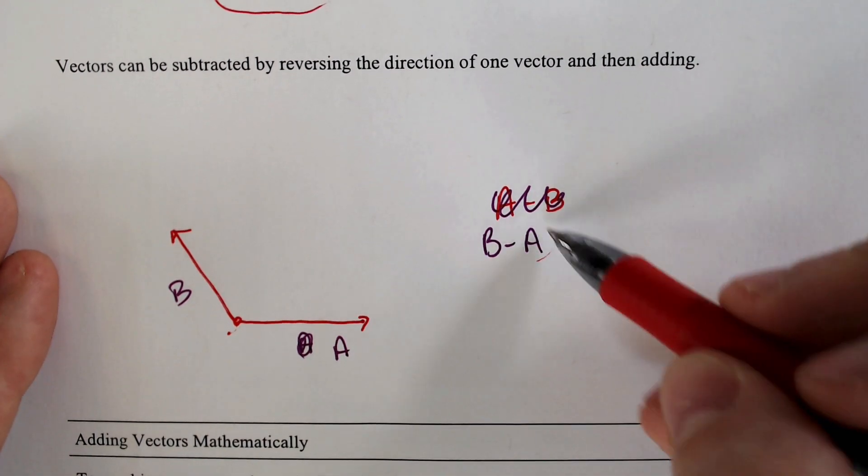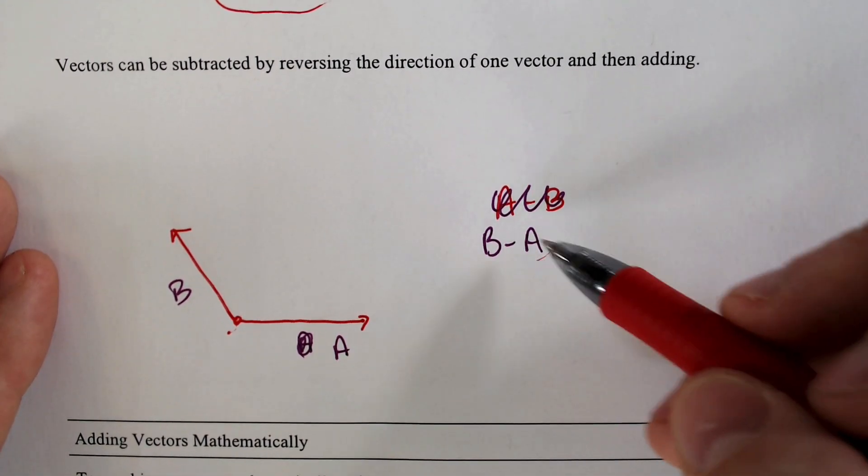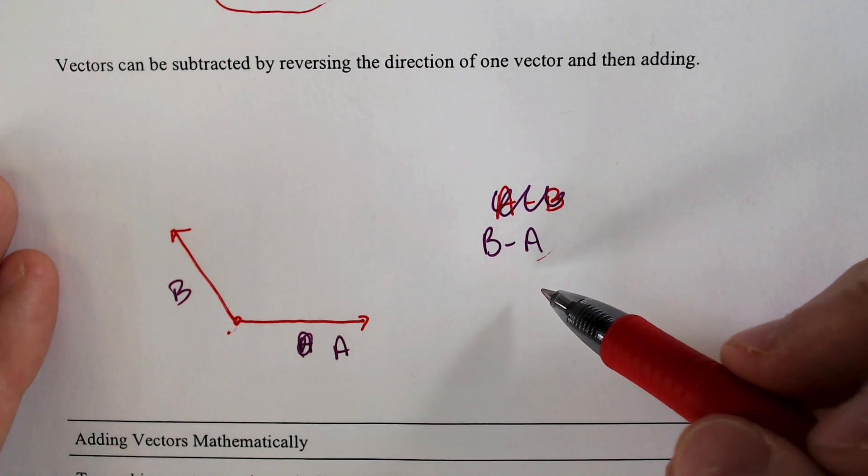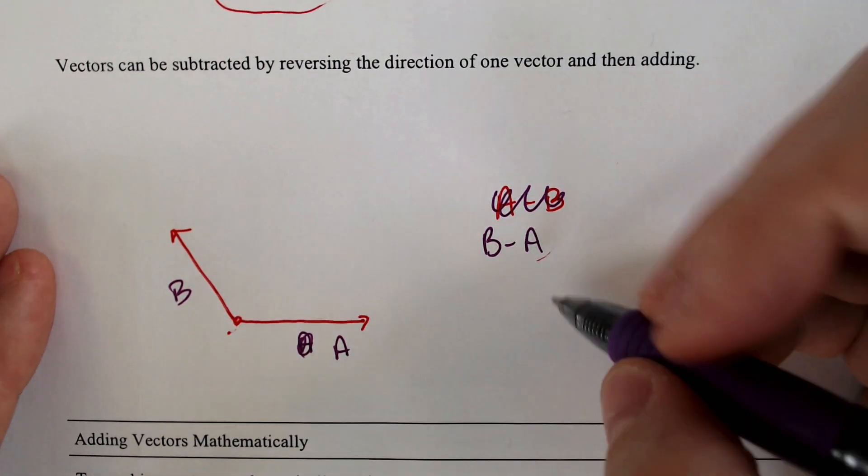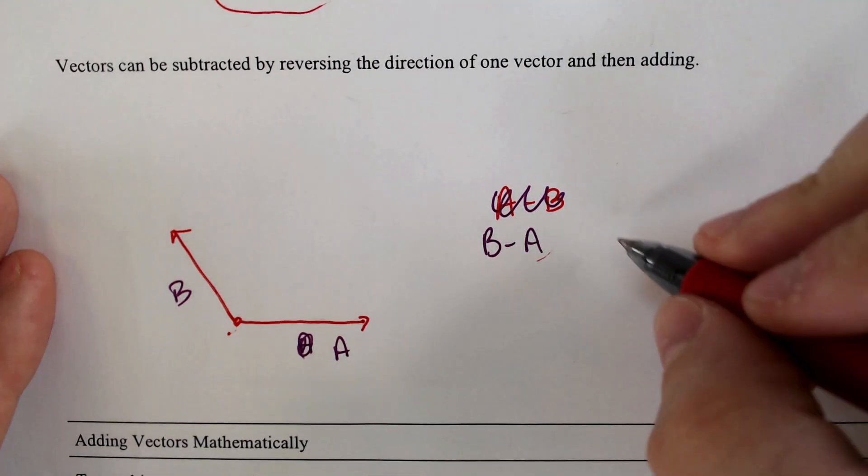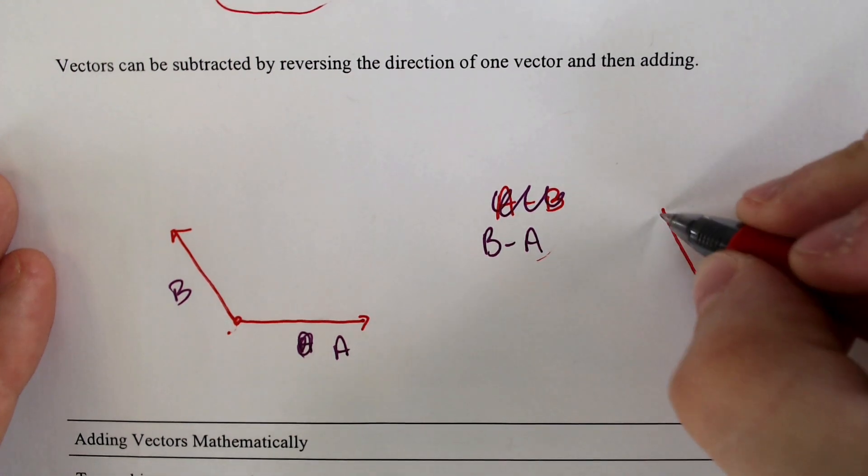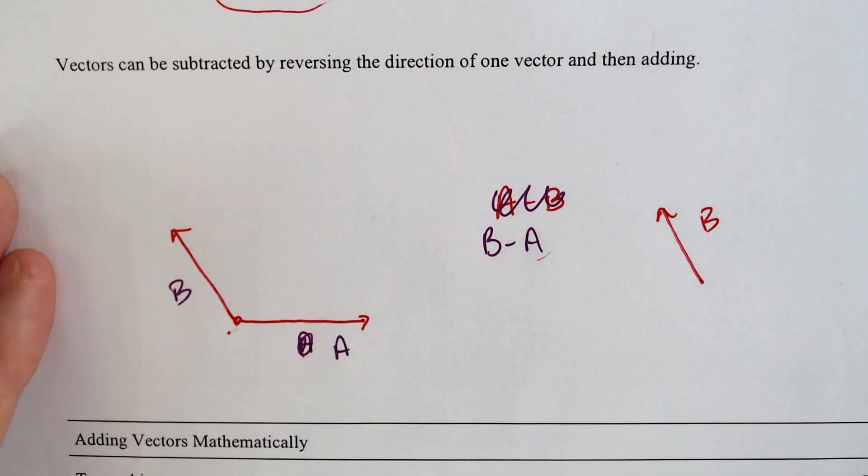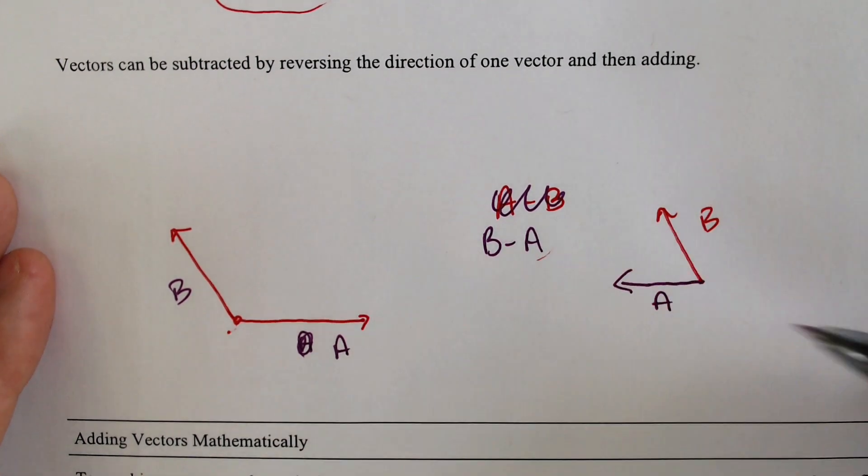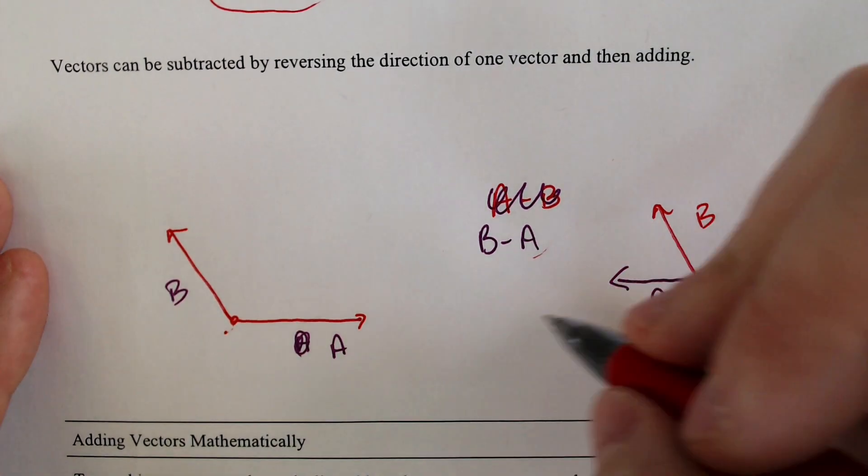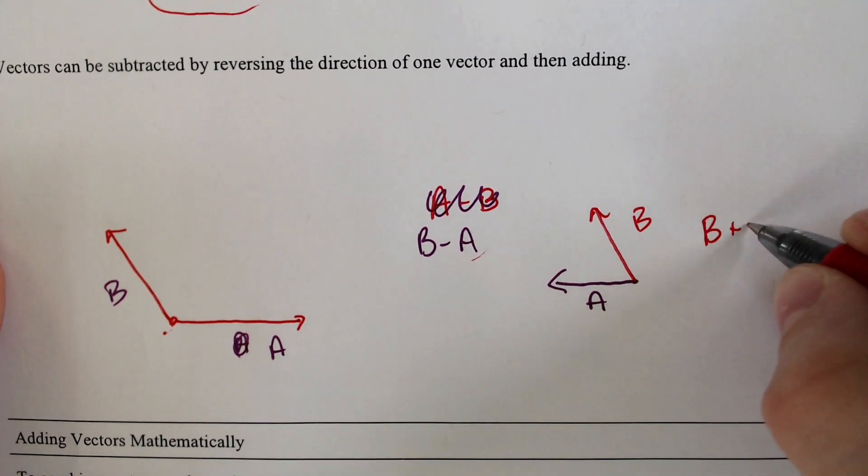In order to subtract, what you need to do is change the layout of A and point it in the complete opposite direction that A originally was. So A is currently pointing to the right. If we redraw this vector where B is in the same location, but A needs to point in the exact opposite location as it was before, then after you do that, you can do B plus A.